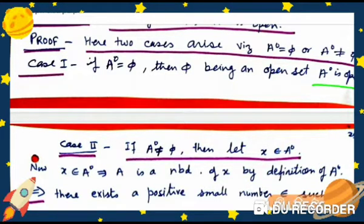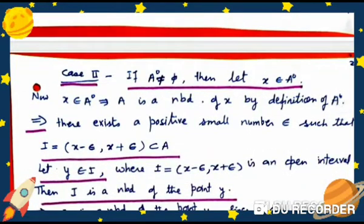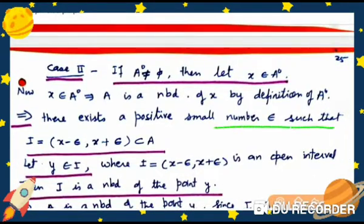Case 2: If A° ≠ φ, let x belong to A°. Then x belonging to A° implies A is a neighborhood of x by the definition of interior point. Therefore there exists a positive number ε such that the open interval I = (x − ε, x + ε) is a subset of A.